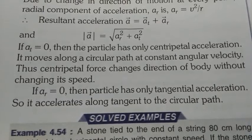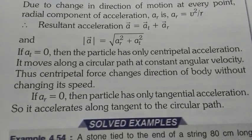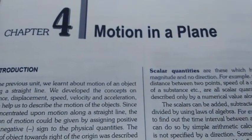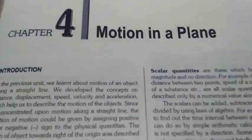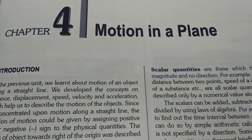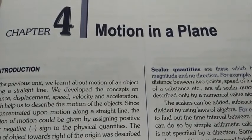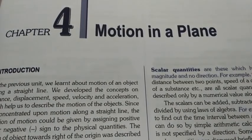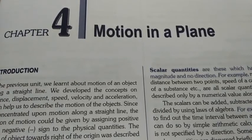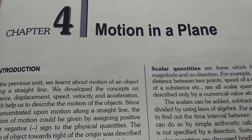If a_t equals zero, the particle has only centripetal acceleration and is in uniform circular motion. If the radial component a_r equals zero, the particle has only tangential acceleration and accelerates along the tangent to the circular path. With that last topic, we have completed Chapter 4: Motion in a Plane. The next chapter will start in a fresh new video. Today's video is smaller than others since we are starting a new chapter tomorrow. See you in the next lecture — take care, do some productive work, and most importantly, be healthy and be safe.